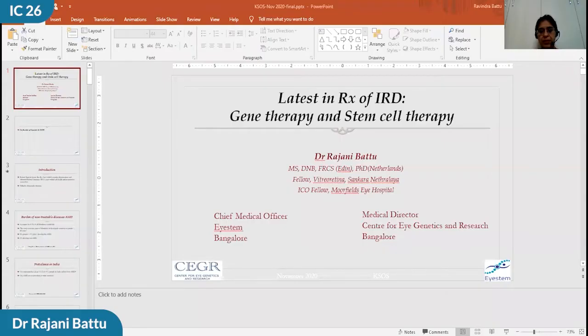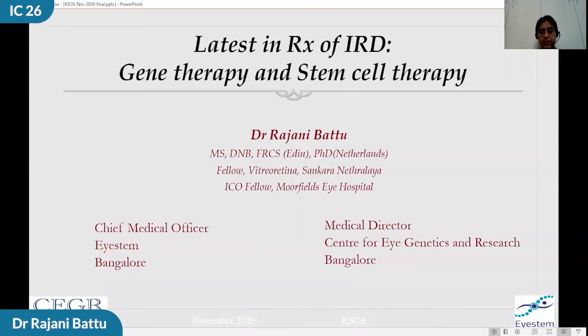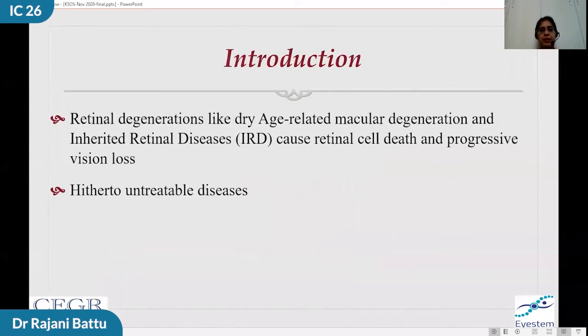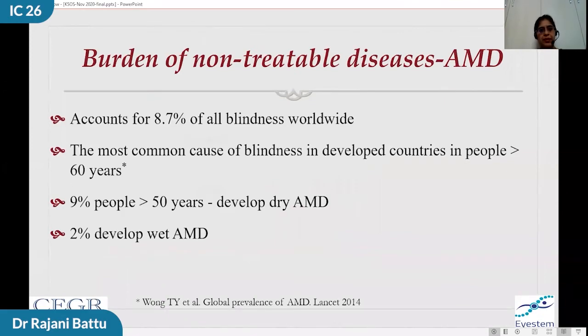Hello everyone. I am Dr. Rajni Bhattu. My topic is going to be on the latest in retinal treatment: stem cell therapy and gene therapy. Retinal degenerations like dry AMD and retinal dystrophy cause progressive visual loss and have no treatment as we speak. AMD accounts for nearly 10% of all blindness worldwide, especially over the age of 60. In India, about 1.5 to 4 crore people are estimated to suffer from AMD. RP is a lot more prevalent, with a prevalence of 1 in 3,500 in the US, but over 1 in 1,000 patients have RP in India, translating to over a million patients with retinitis pigmentosa alone.